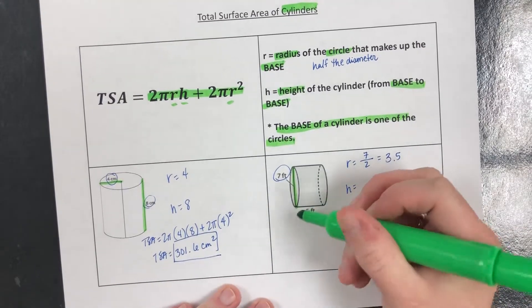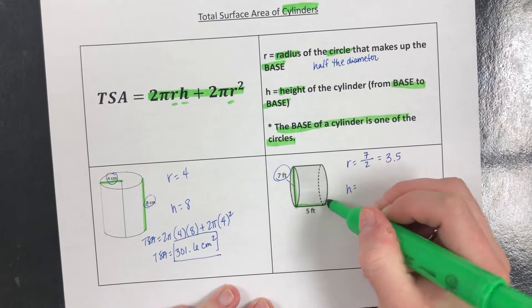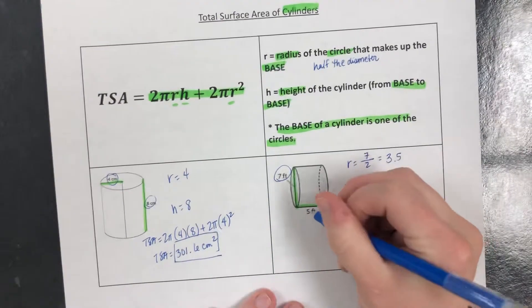Next thing we need is the height from base to base. That's 5.